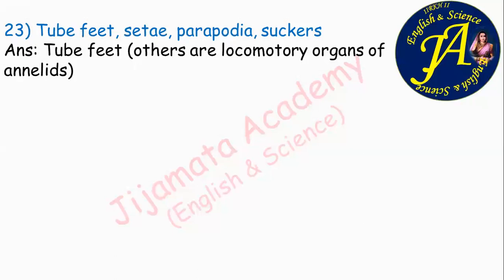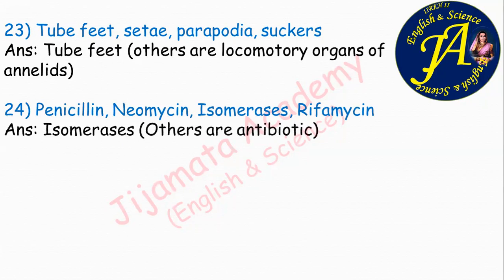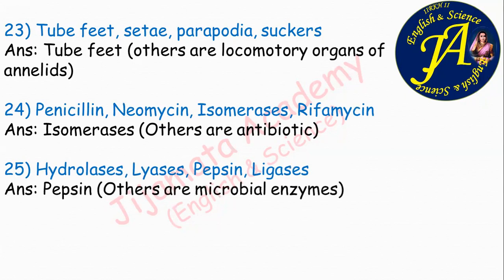Penicillin, neomycin, isomerases, rifamycin. The correct answer is isomerases, because penicillin, neomycin, and rifamycin are microbial antibiotics, while isomerases is a microbial enzyme. Next: hydrolases, lyases, pepsin, ligases. The correct answer is pepsin, because all others are microbial enzymes while pepsin is produced in our stomach by our gastric glands.